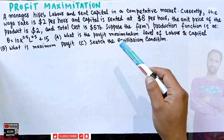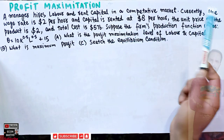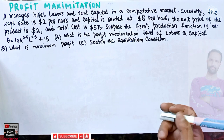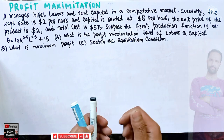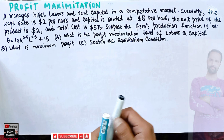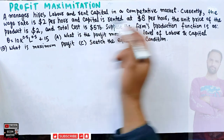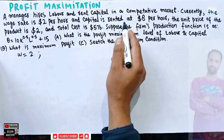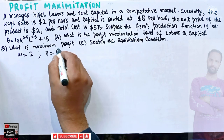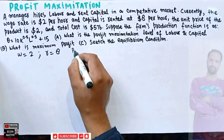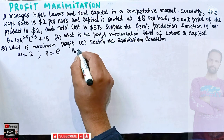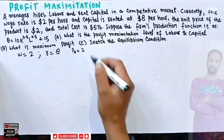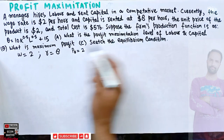We have to find the profit-maximizing level of labor and capital that this firm should employ, the maximum profit, and we have to sketch the equilibrium condition. So we are given: wage rate = $2, rental rate of capital = $8, and the price of the product P_q = $2.